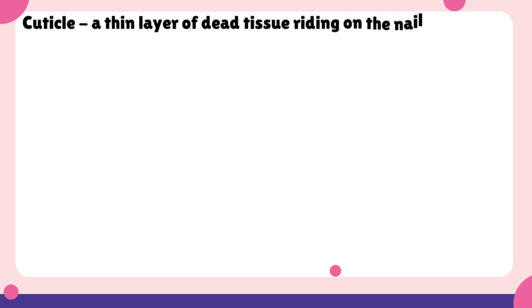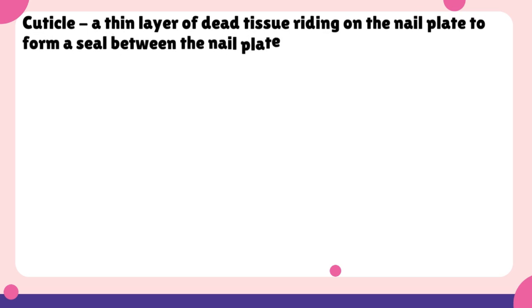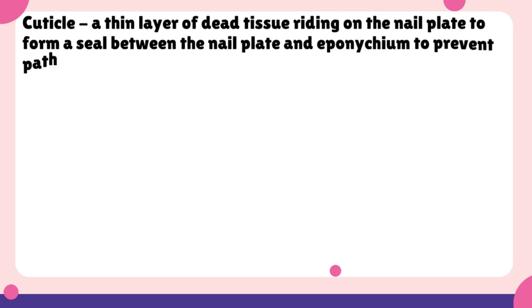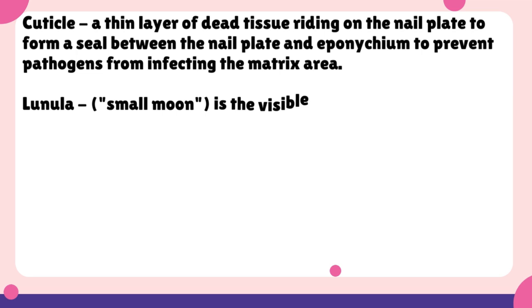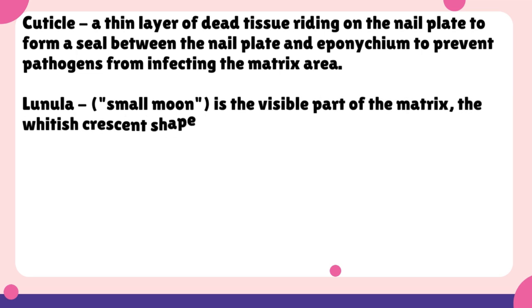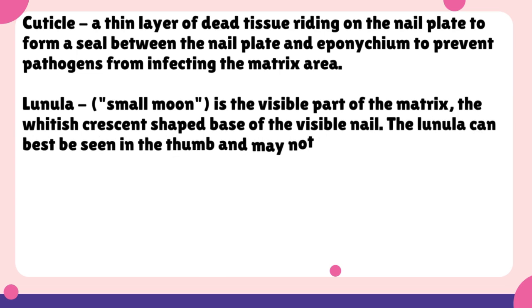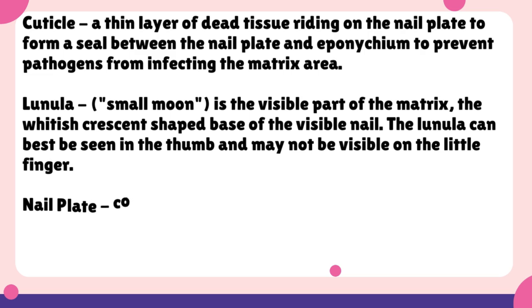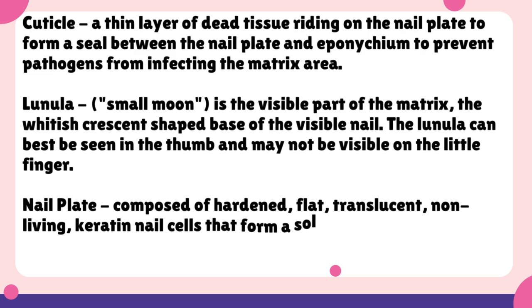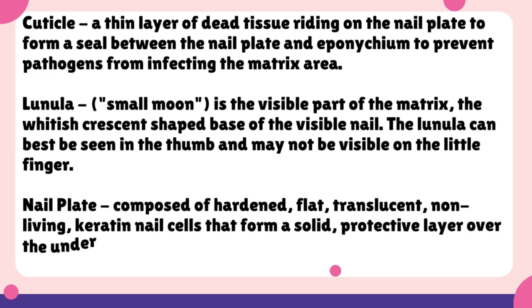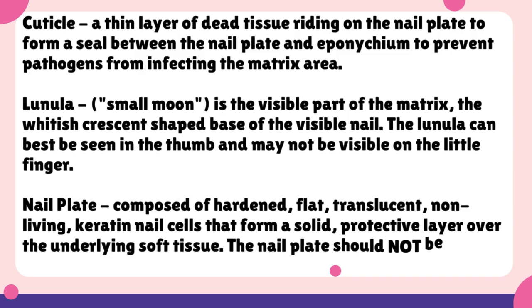Cuticle is a thin layer of dead tissue riding on the nail plate to form a seal between the nail plate and eponychium to prevent pathogens from infecting the matrix area. Lunula, or small moon, is the visible part of the matrix — the whitish crescent-shaped face of the visible nail. The lunula can best be seen in the thumb and may not be visible on the little finger. Nail plate is composed of hardened, flat, translucent, non-living keratin nail cells that form a solid, protective layer over the underlying soft tissue.